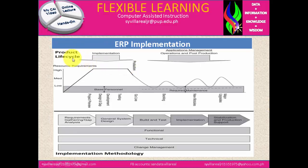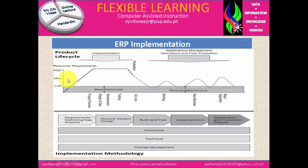Here we have the figure of the ERP implementation product lifecycle. It includes the implementation phase, application management, operation, and post-production. Under implementation, we have resource requirements at production levels: high, medium, and low. We also have major updates or upgrades and new modules.